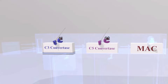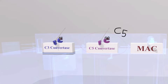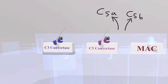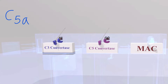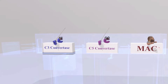C3b also helps produce C5 convertase. C5 convertase cleaves C5, producing C5a and C5b. C5a is important for neutrophil chemotaxis. C5b is important because it joins C6 through C9 to produce MAC. MAC, represented here by a figure about to punch a hole in a wall, is responsible for creating holes in cell membranes.